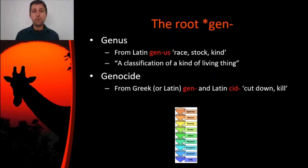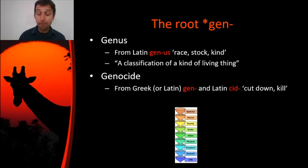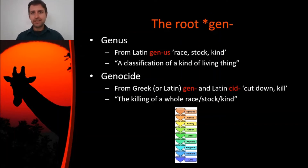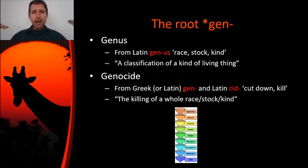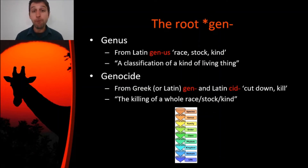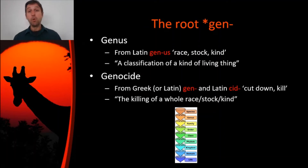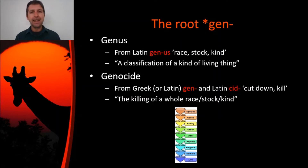Genocide, of course, also comes from the Gen root, because genocide comes from this Gen plus the second part from Latin caedo — the root kaido — which means to cut down or to kill. So the idea is it's the killing of the whole genus, a race, a stock, a kind, an ethnicity. We're not 100% sure whether this is supposed to come from the Greek genos or the Latin genus because they had very similar words, just one vowel different. This word was only coined in 1944, and the O on it might make you think Greek — since Greek had an O there and Latin had a U — but that could just be a connecting vowel.